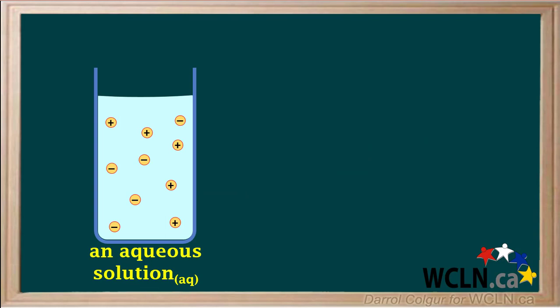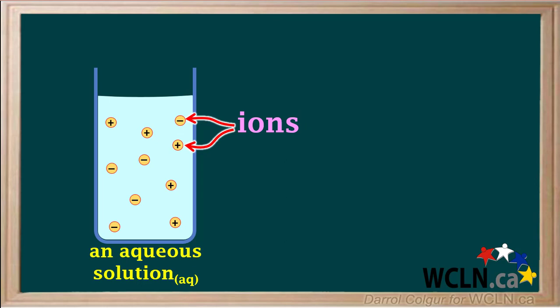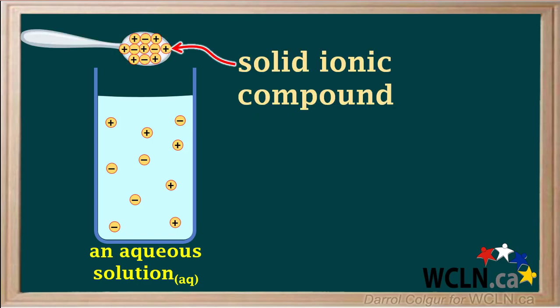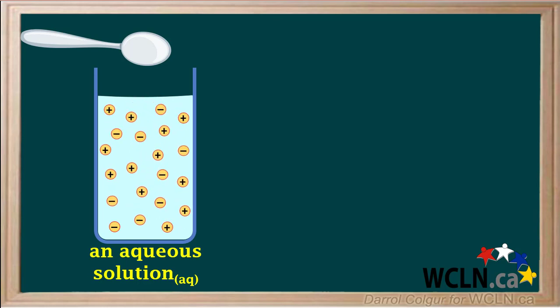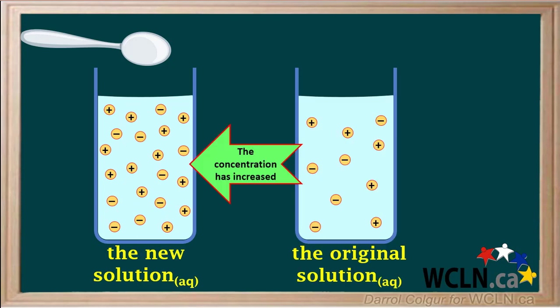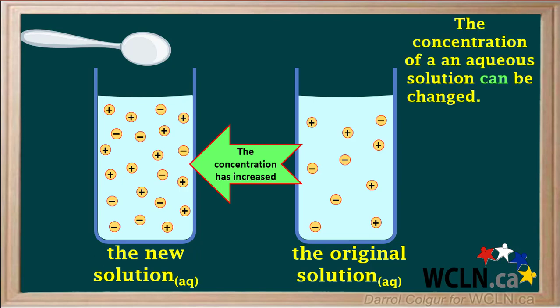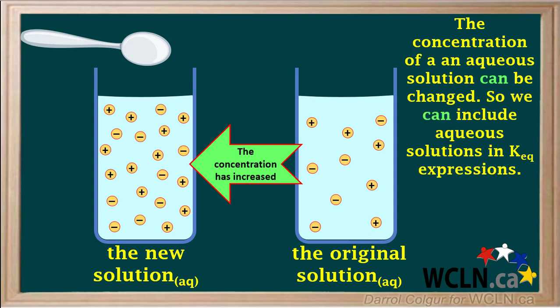Next, we'll look at a model for an aqueous solution. The light blue background represents water. The charged particles are ions, mixed in the water and able to move freely throughout the solution. If we take a solid sample of the compound made up of these ions and dump it in the solution, the added solid will dissociate and the ions will spread out evenly in the solution. We can clearly see that the concentration of the ions is greater in the new solution. So we conclude that the concentration of an aqueous solution can be changed; therefore, we can include aqueous solutions in Keq expressions.